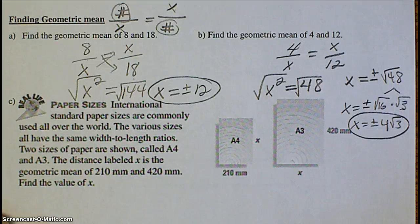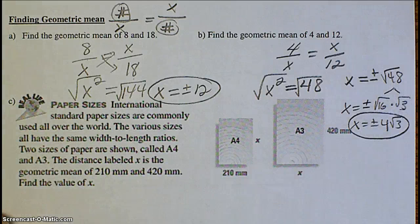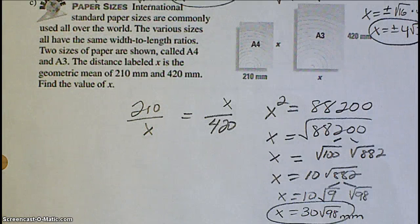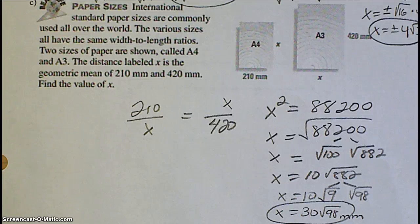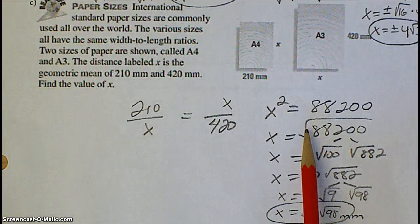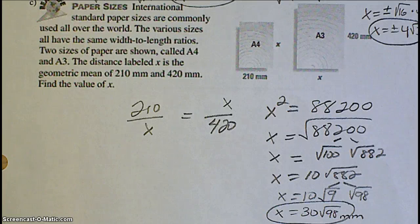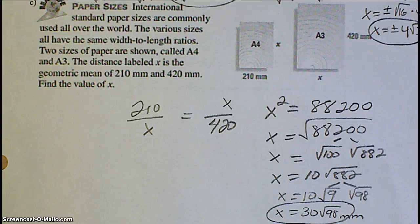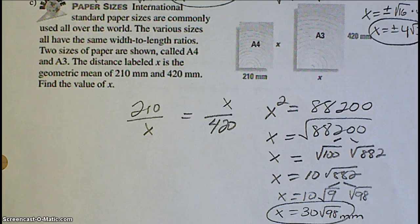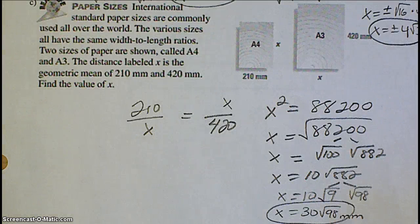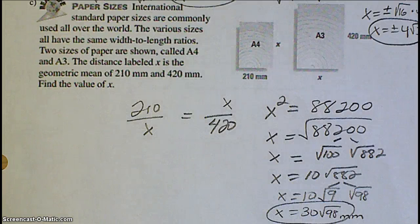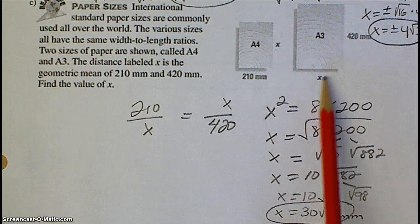See if you can try part C. This is a real-life application. And then resume the video to see if you got your answer right. Now, since this is a real-life example, even though you have to do the square root right here, it wouldn't really make sense to have a negative length of a paper. So you have to use your discretion if it's a real-life example and it does not make sense to have a negative answer. Then you would exclude that from your answer and you would not put the plus or minus. Now, in this case, you have a pretty large radical that you have to simplify, but your final answer should be 30 root 98, which makes sense because that's around 297 millimeters, which would be a reasonable number for these lengths.